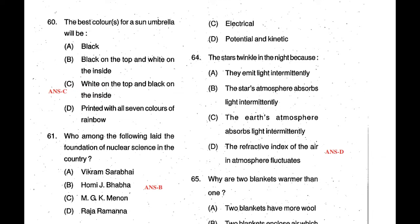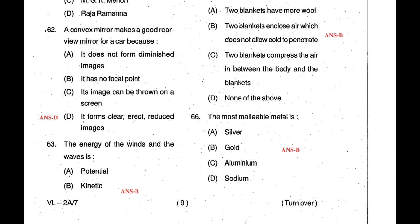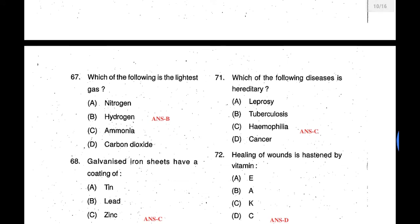Question 64: Stars twinkle in the night because the refractive index of air in the atmosphere fluctuates — answer is D. Question 65: Why are two blankets warmer than one? Because the gap between two blankets does not allow cold to penetrate — answer is B. Question 66: The most malleable metal is gold. Malleable means drawing a thin metal into a wire. Gold is the most malleable metal — answer is B.